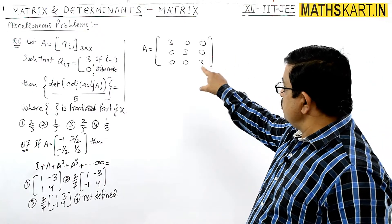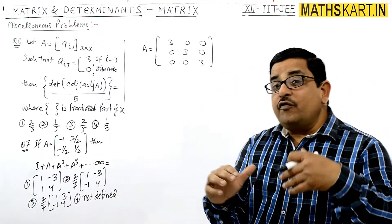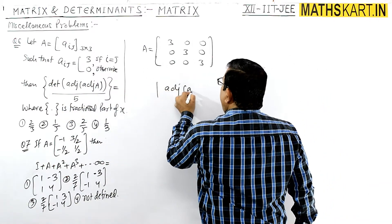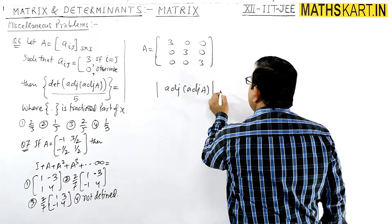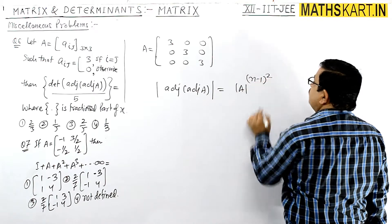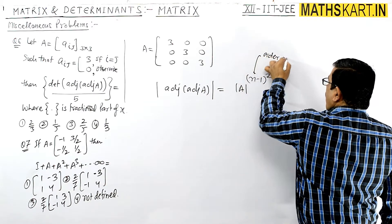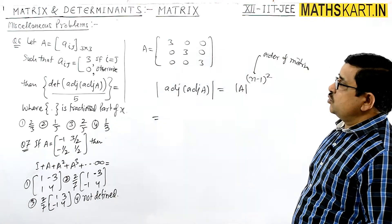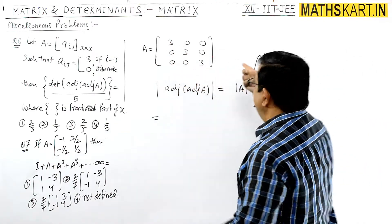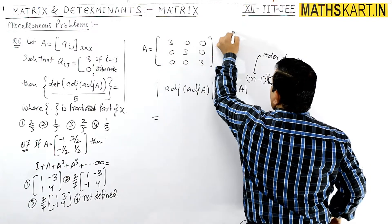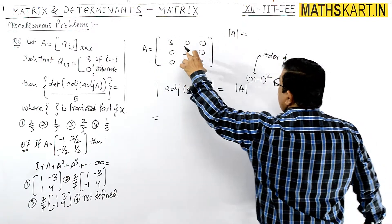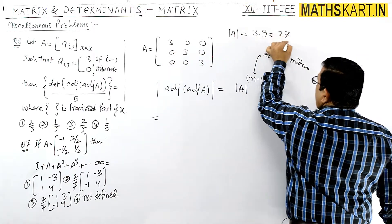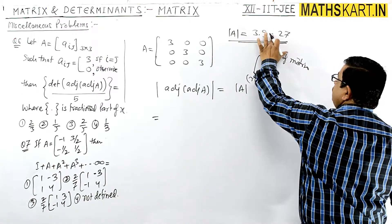Now we have to find the determinant of adjoint of adjoint of A. For this we have a formula: determinant of adjoint of adjoint of A equals determinant of A to the power (n−1) whole squared, where n is the order of the matrix. The determinant of A equals 3×3×3 = 27.